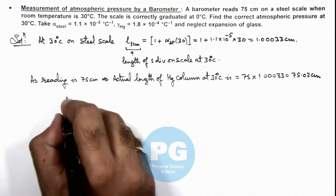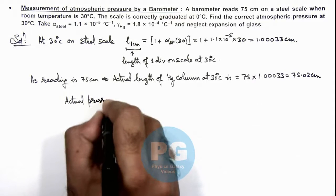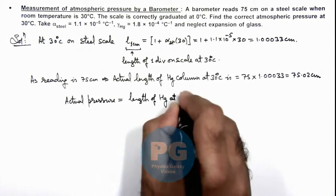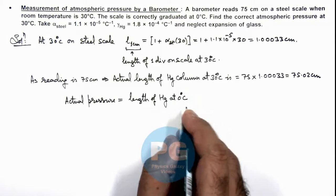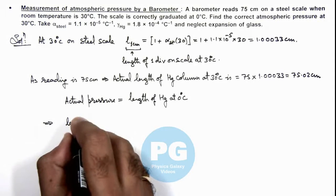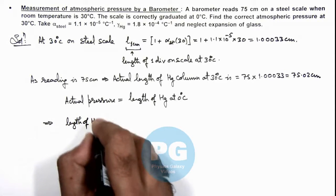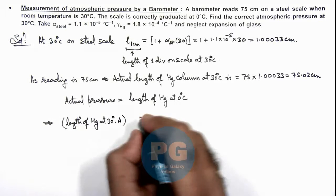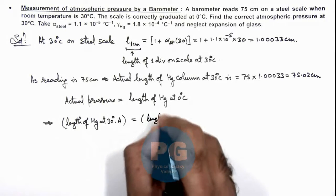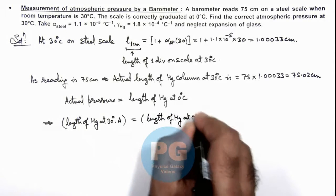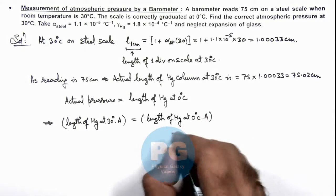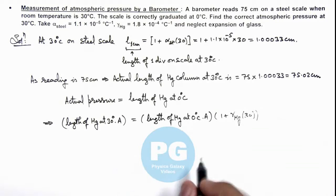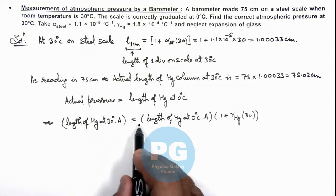So we can calculate now the actual pressure, which is equal to the length of mercury at zero degree centigrade. This can be calculated as the length of mercury at 30 degree centigrade multiplied by the cross-sectional area of the tube, multiplied by 1 plus gamma of mercury times 30. This is the way we use the relation that final volume at 30 degree centigrade equals initial volume at zero degree centigrade.